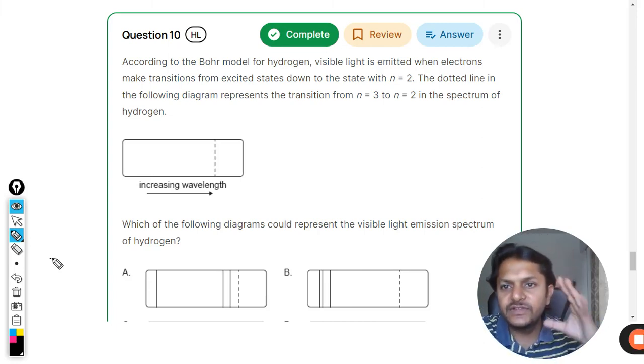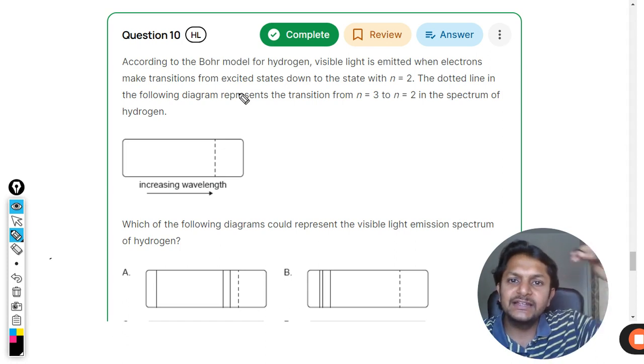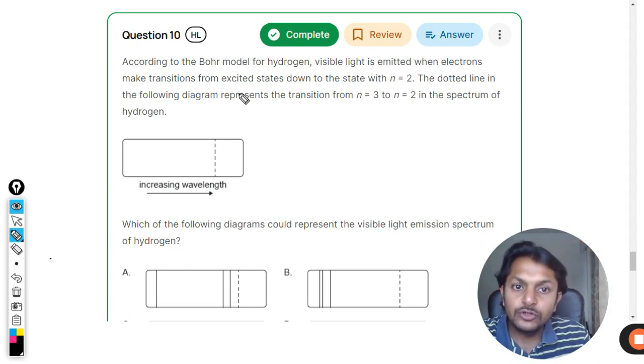Okay dear students, let us see what is in this question. According to the Bohr model of hydrogen, visible light is emitted when electrons make a transition from excited states to n equals two.